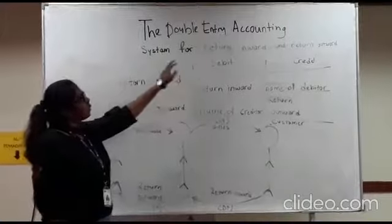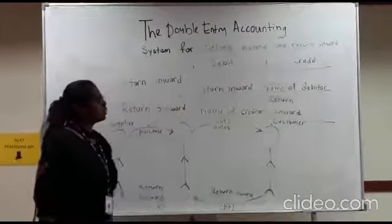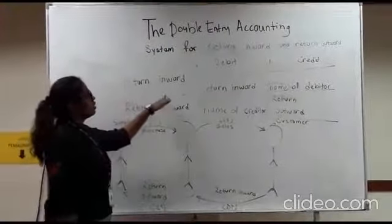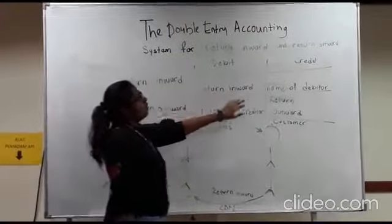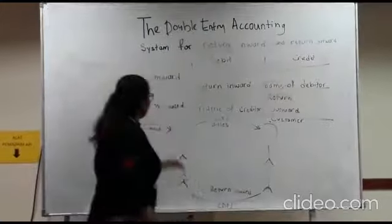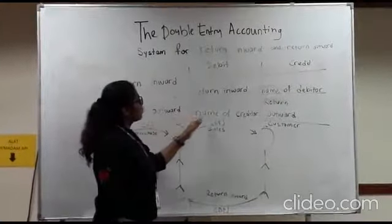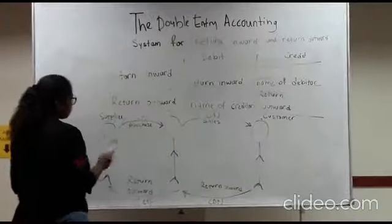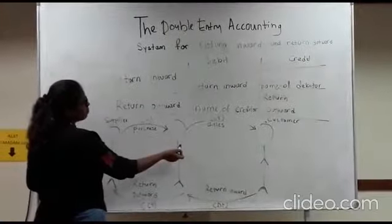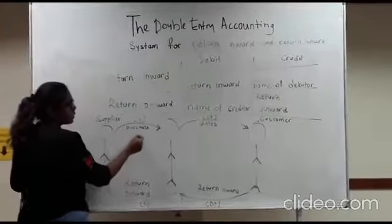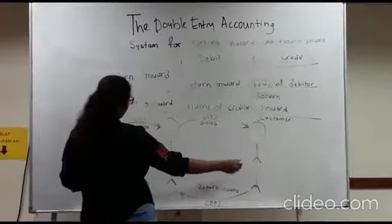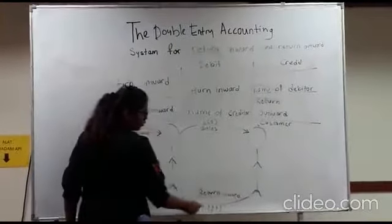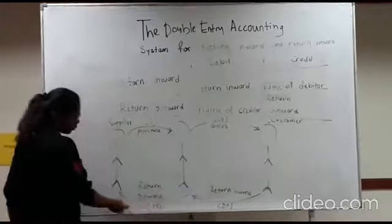The double entry system for returns inward and returns outward. The formula: for returns inward, it will be on the debit side and the credit side will be the name of the debtor. For returns outward, the credit side will be returns outward. It goes from supplier to customer. Returns inward is on the debit side, returns outward is on the credit side.